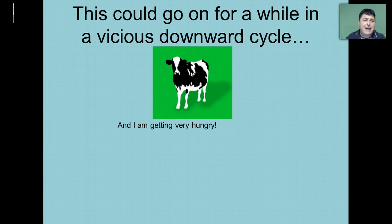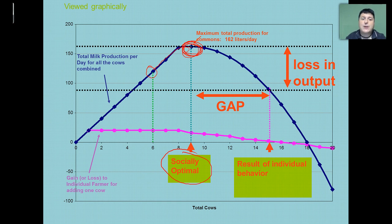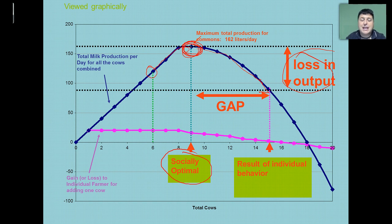Let's take a look at this graphically to see what is happening. We began with six cows and added a few, reaching the point of maximum production for that commons — this is what would be socially optimal for the group. But since we were thinking as individuals, we continued to add new cows. This continual addition decreased our maximum output. So as a result of that mentality of 'if I don't use it, someone else will,' we actually had a depletion of those resources and a reduction in what could be produced by that common resource.